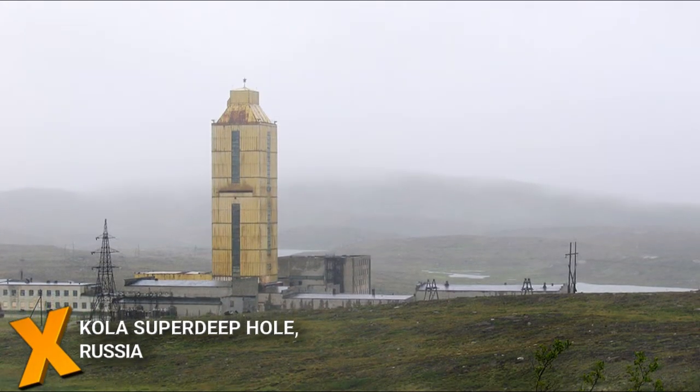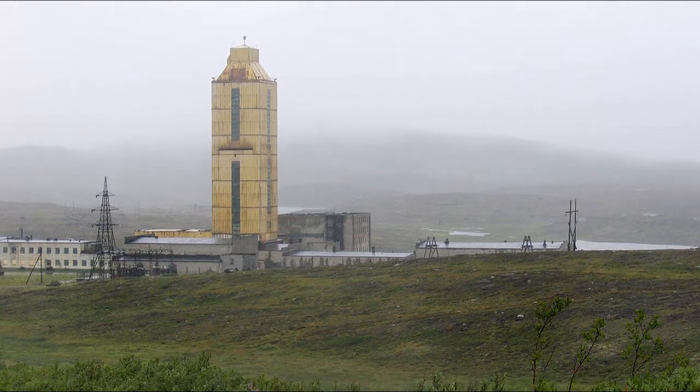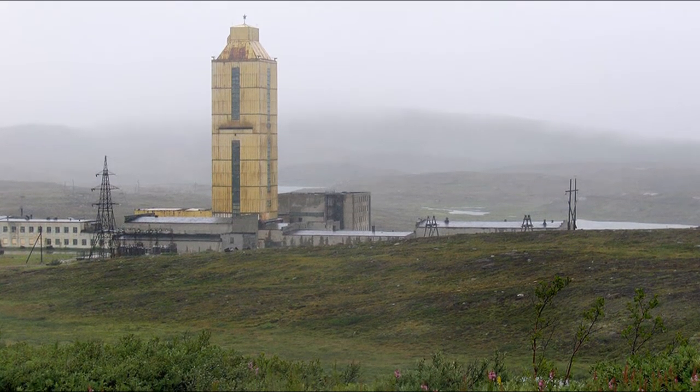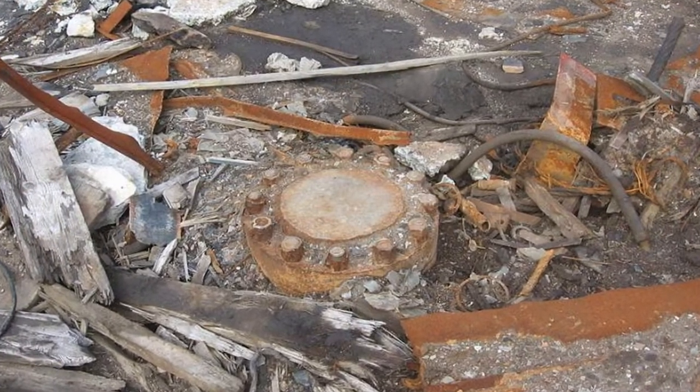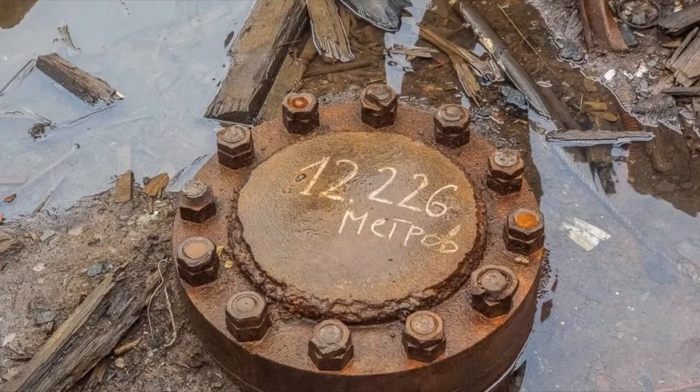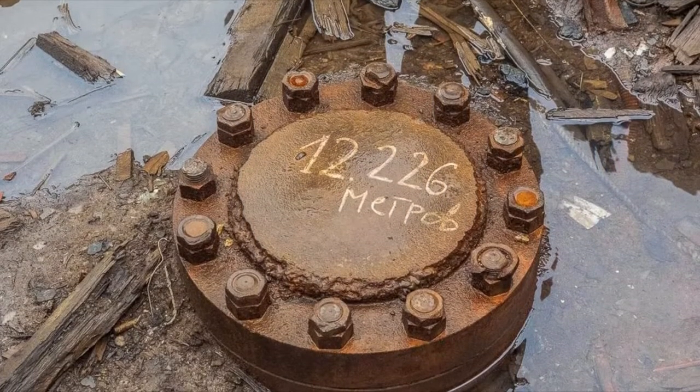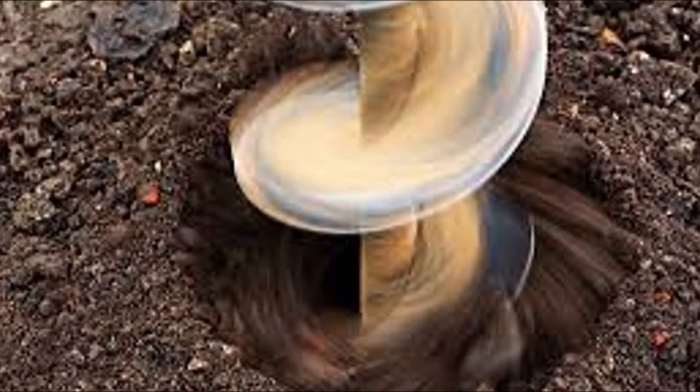Kola Superdeep Hole, Russia. The Russian project planned to drill a hole as deep as possible into the Earth's crust, reaching a depth of almost 40,000 feet. It is still the world's deepest artificial point. According to analysts, if the hot magma hadn't halted the digging to the point where it was impossible to continue, the resulting hole may have caused tectonic movements due to the unnatural pressure release in the atmosphere.